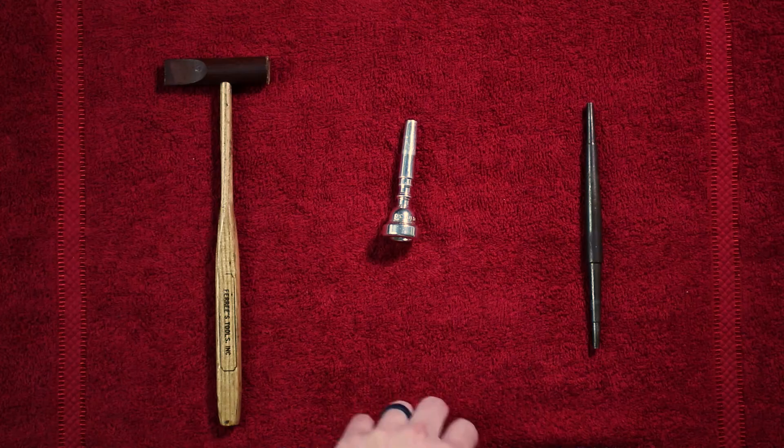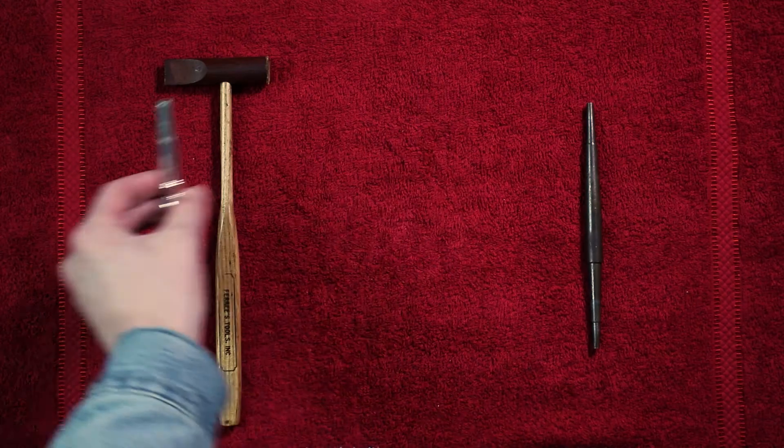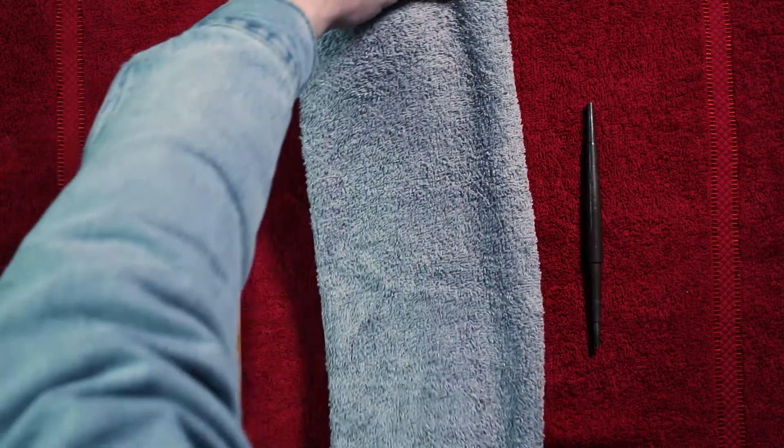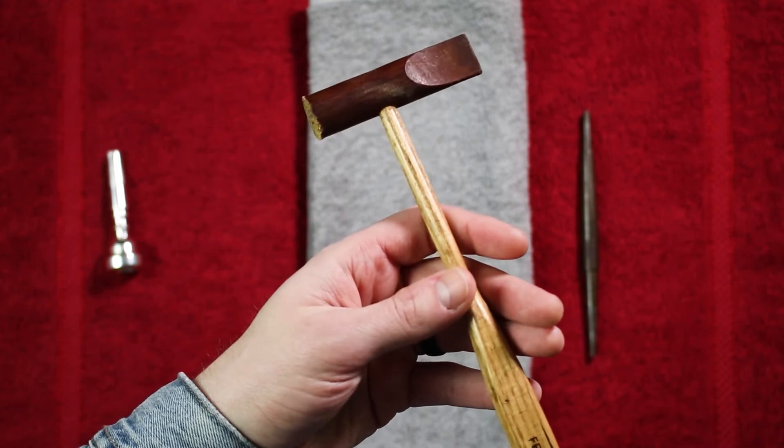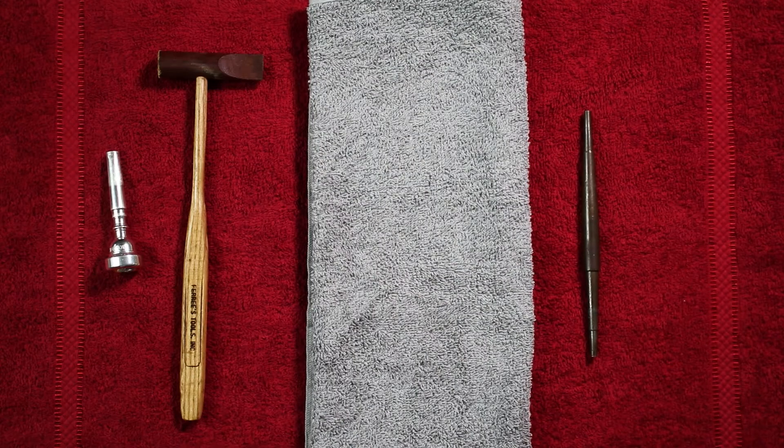So, to get started, you just need your damaged mouthpiece, a soft cloth to rest the mouthpiece on, a soft-faced hammer such as canvas, rawhide, or plastic, and a truing tool.